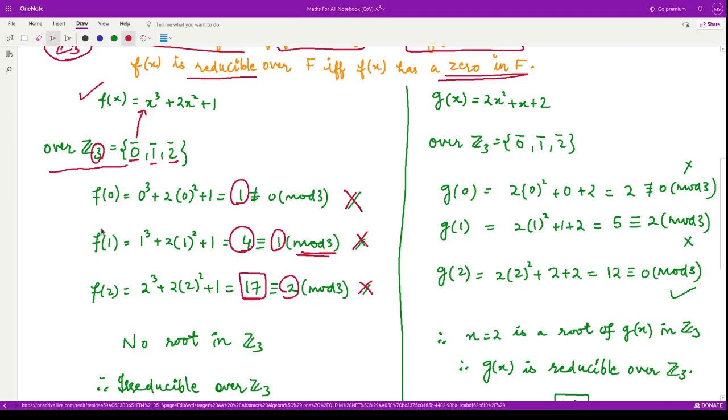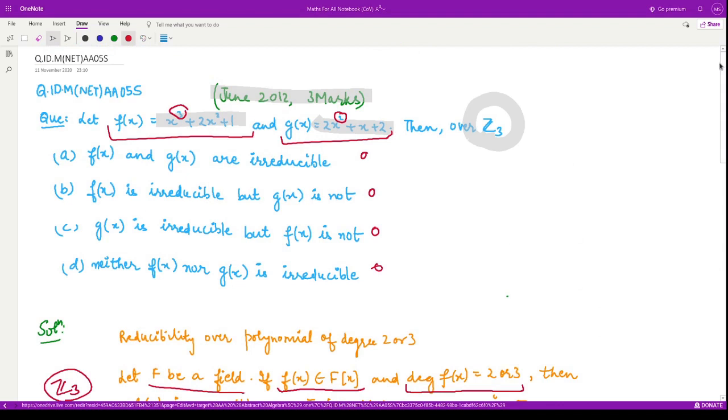Therefore, these 3, they are not any root. These do not form the root for polynomial f(x). Hence, we say that there is no root of this polynomial f(x) in Z₃. Therefore, this polynomial f(x) is irreducible over Z₃. So, these options are incorrect. They are saying f(x) is not irreducible and here they are saying f(x) is not irreducible. So, these cannot be the options.